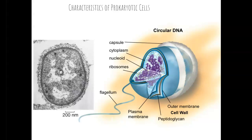The first thing is the characteristics of prokaryotic cells. Prokaryotic cells have circular DNA, which is located in the center of the cell in an area called the nucleoid. Prokaryotic cells do not have a membrane-enclosed nucleus. They also have free-floating ribosomes in their cytoplasm, as well as a capsule and a cell wall made of an outer membrane, peptidoglycan layer, and plasma membrane.